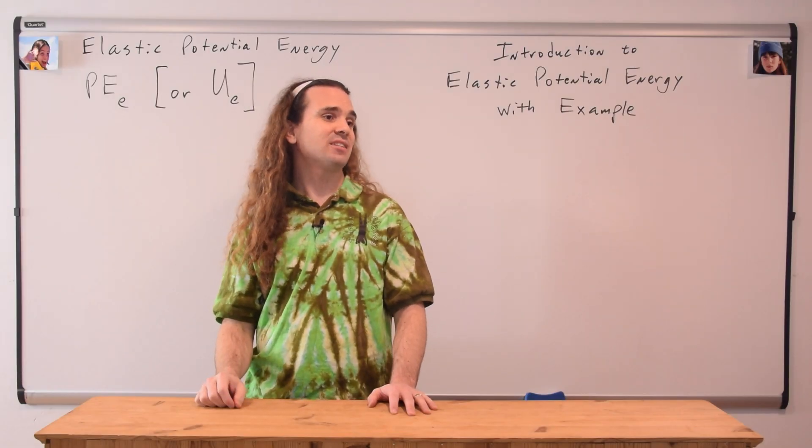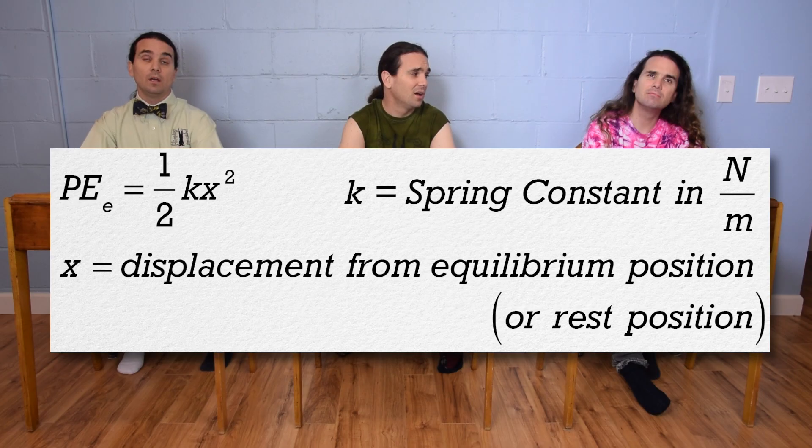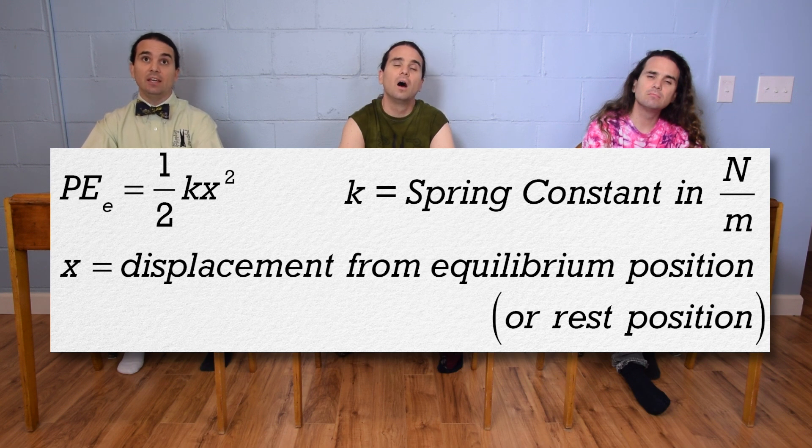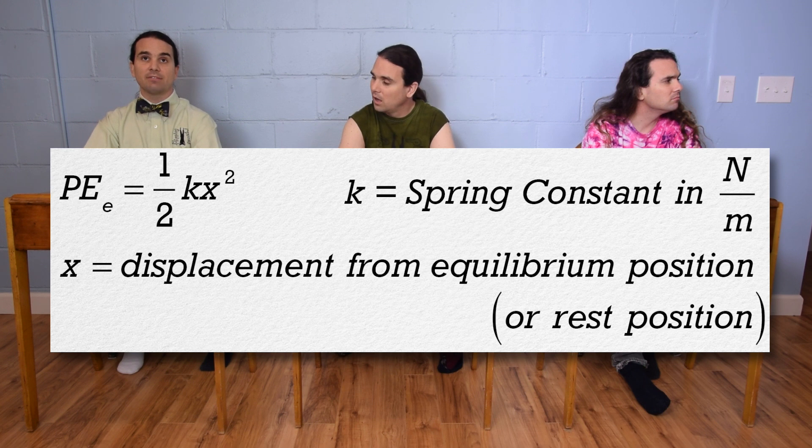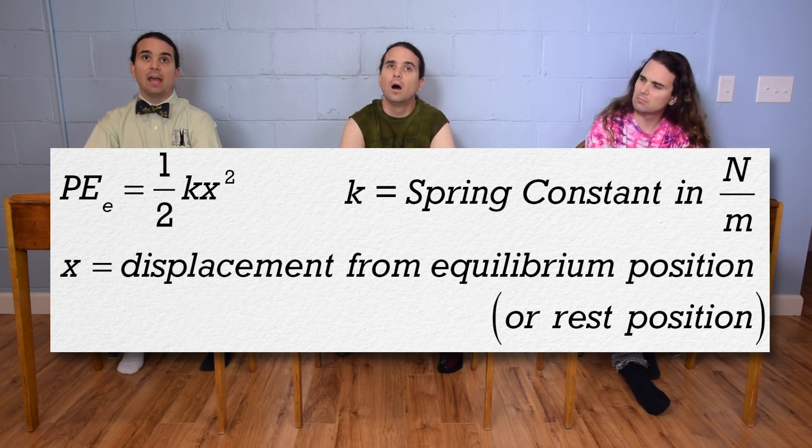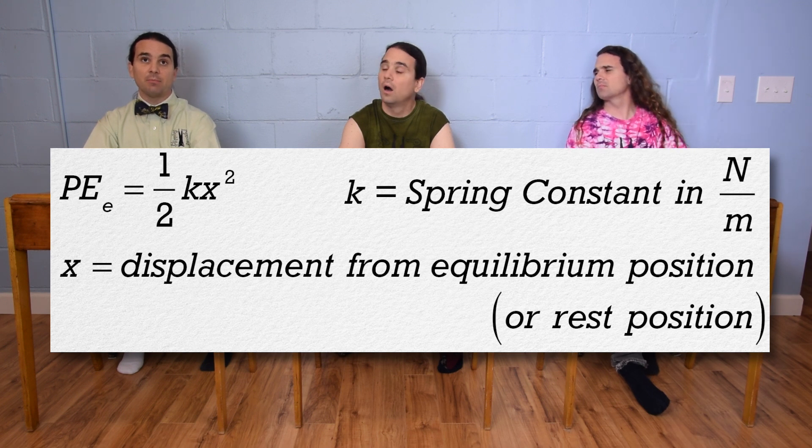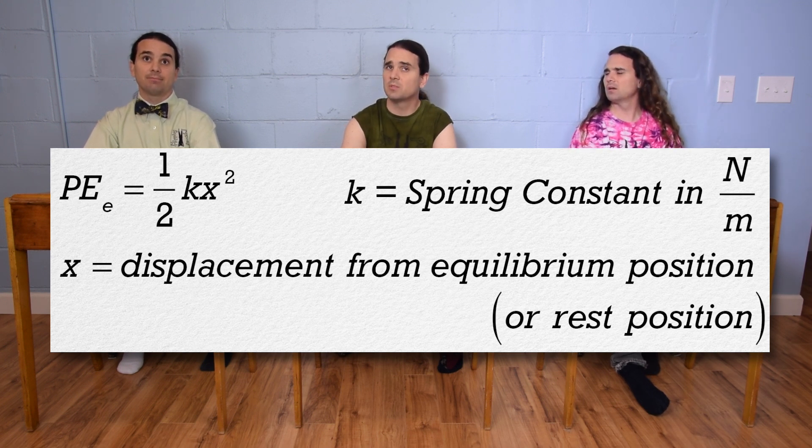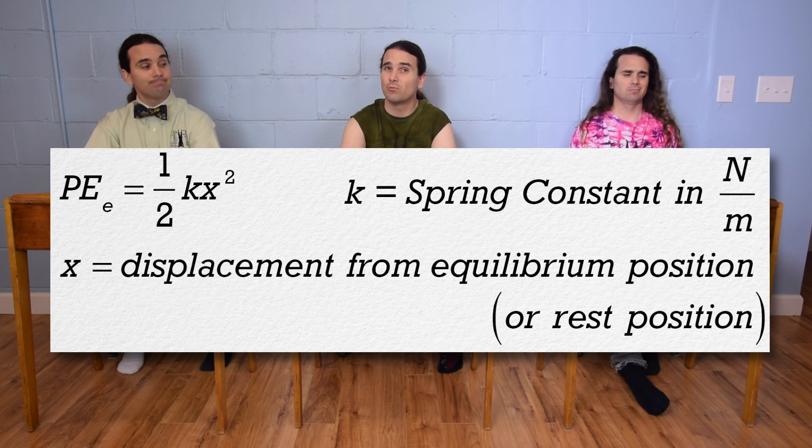Billy, the equation for elastic potential energy, please. Elastic potential energy equals one-half kx squared, where k is the spring constant of the spring and usually has dimensions of newtons per meter and x is the displacement from equilibrium position. But sometimes the equilibrium position is called the rest position.